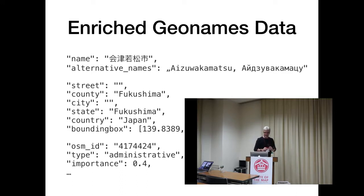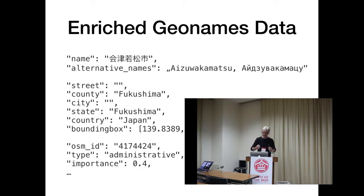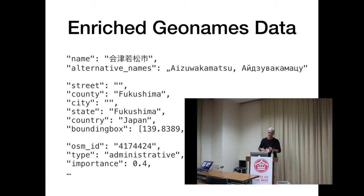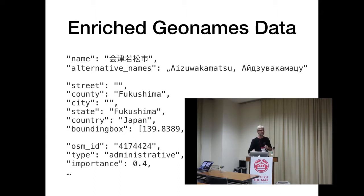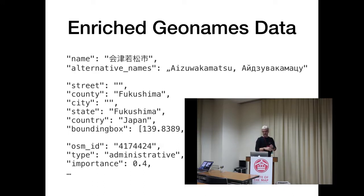I slightly modified the output. You see the local name — the name in Japanese characters — which is the main name. Then there are alternative names collected from other languages. It seems to be Roman English and Russian. These are extracted out of OpenStreetMap data and other data. It's not a street, just an empty entry.